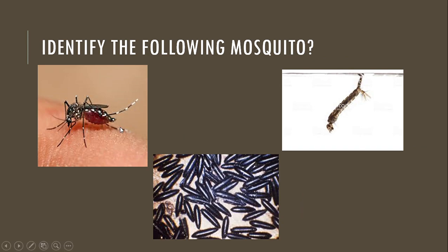Next question: this mosquito is lying parallel to the ground and has stripes on the body. The eggs are single and rod-shaped. The character of the larvae is a bottom feeder with a siphon present. This is Aedes mosquito.